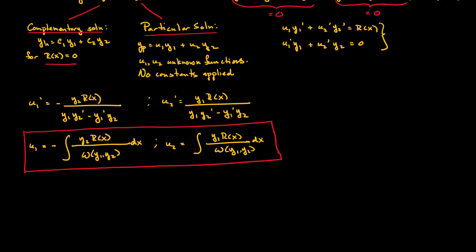So as a reminder, our general solution is Y = YH + YP, which equals c1*y1 + c2*y2 + u1*y1 + u2*y2. And this will allow us to solve a second-order linear non-homogeneous ordinary differential equation.